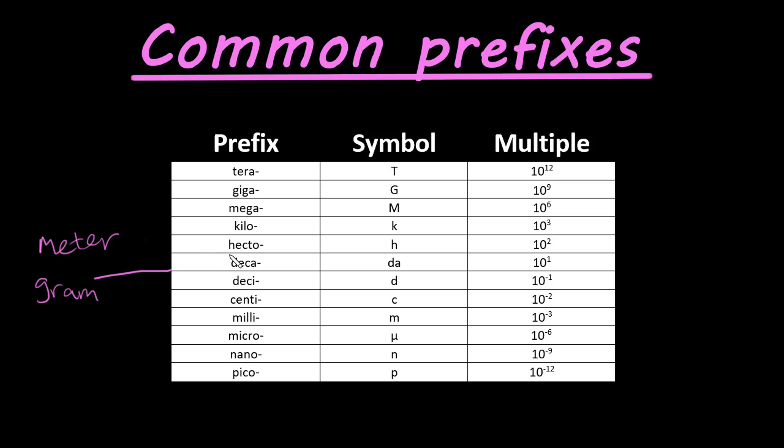So let's say if we have a decagram, we add this prefix to our gram, that's our base unit. So now we take 1 gram times our multiplier, times 10 to the first power, which is just 10, and that makes our value 10. So a decagram is equal to 10 grams.